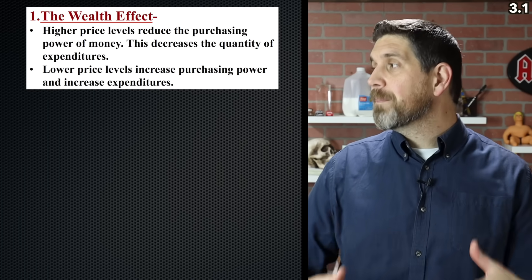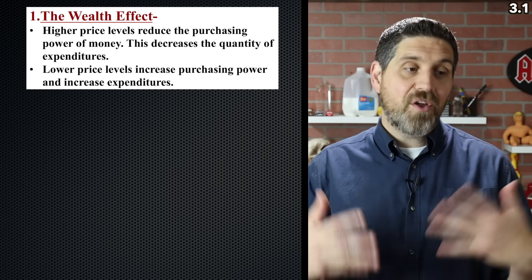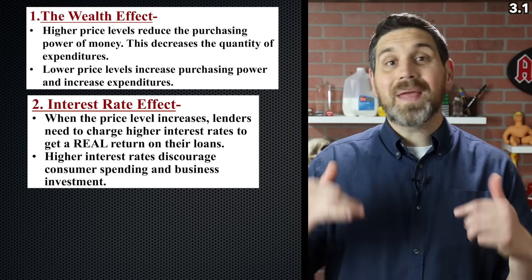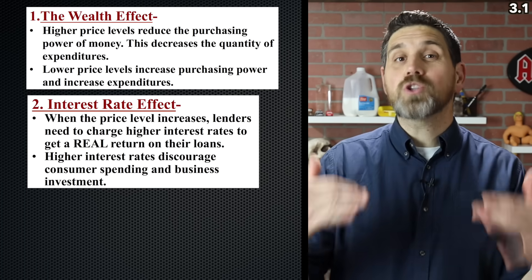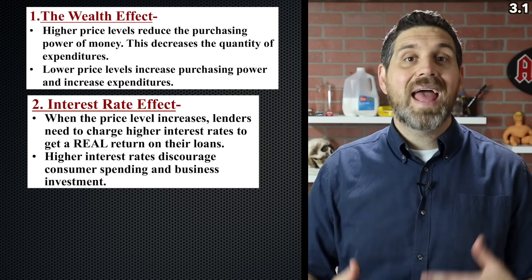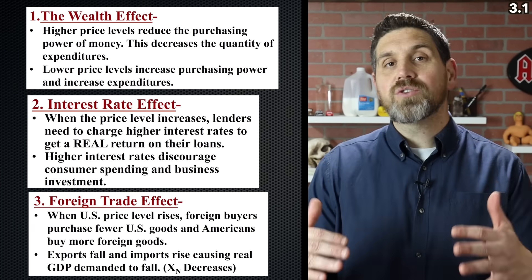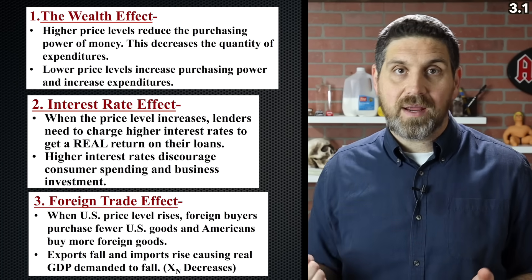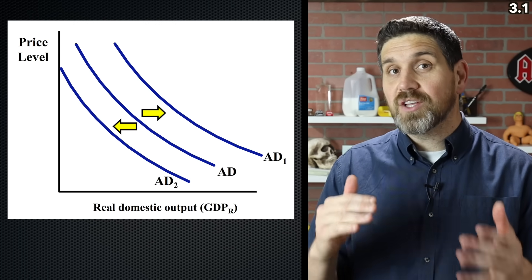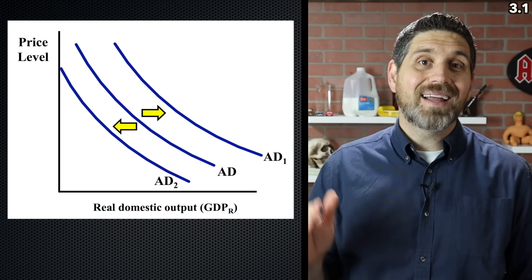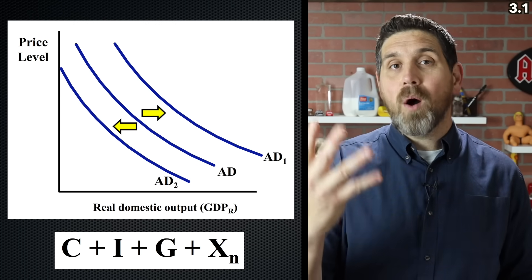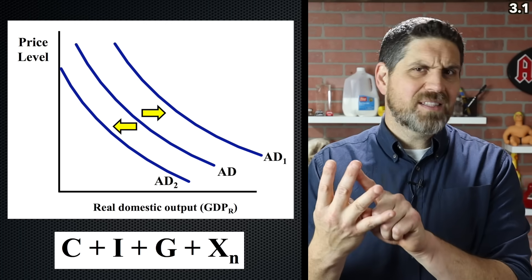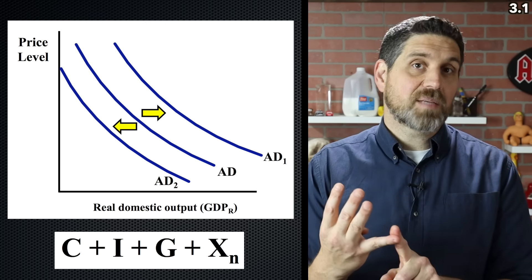If the price level goes up, people can't buy as much as they did before — their assets have less value, so they're going to buy less. If the price level goes up, interest rates also go up, so people are going to borrow less and spend less. And if the price level goes up, people in other countries are going to buy less of our products. The aggregate demand curve can shift: an increase is to the right, a decrease is to the left, and the four components are the shifters — consumer spending, investment, business spending, government spending, and net exports.